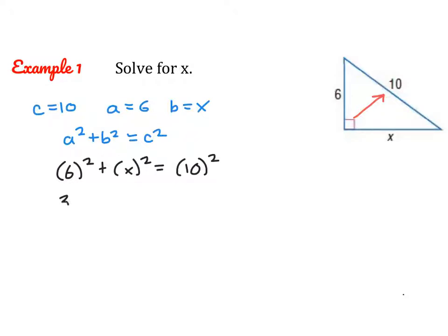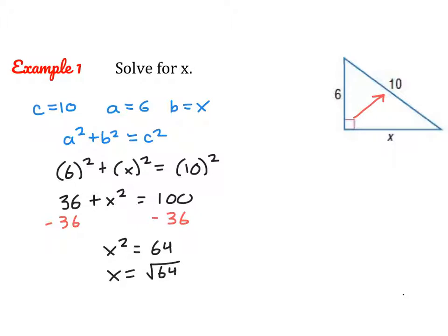Now all we have to do is solve for X. I'm going to simplify, then subtract 36 from both sides, and then take the square root of both sides. The square root of 64 is 8. 64 is a perfect square, so a very nice number. Usually when we take the square root of both sides, we put a plus or minus sign in front, but since we're working with a triangle, it wouldn't make sense to have a negative length, so we only use the positive square root.